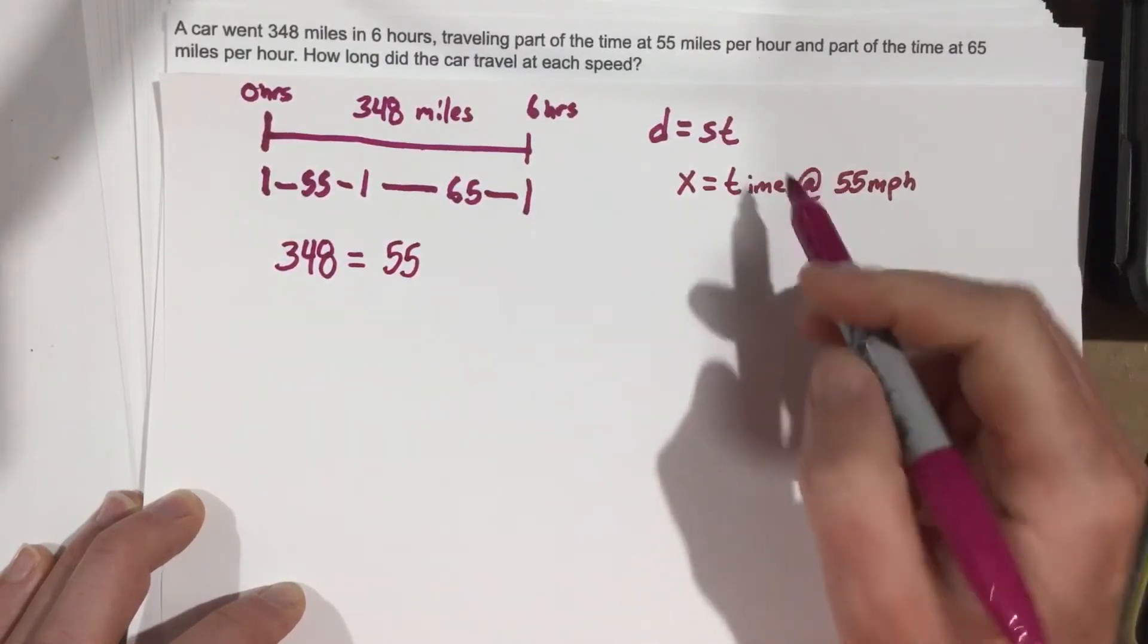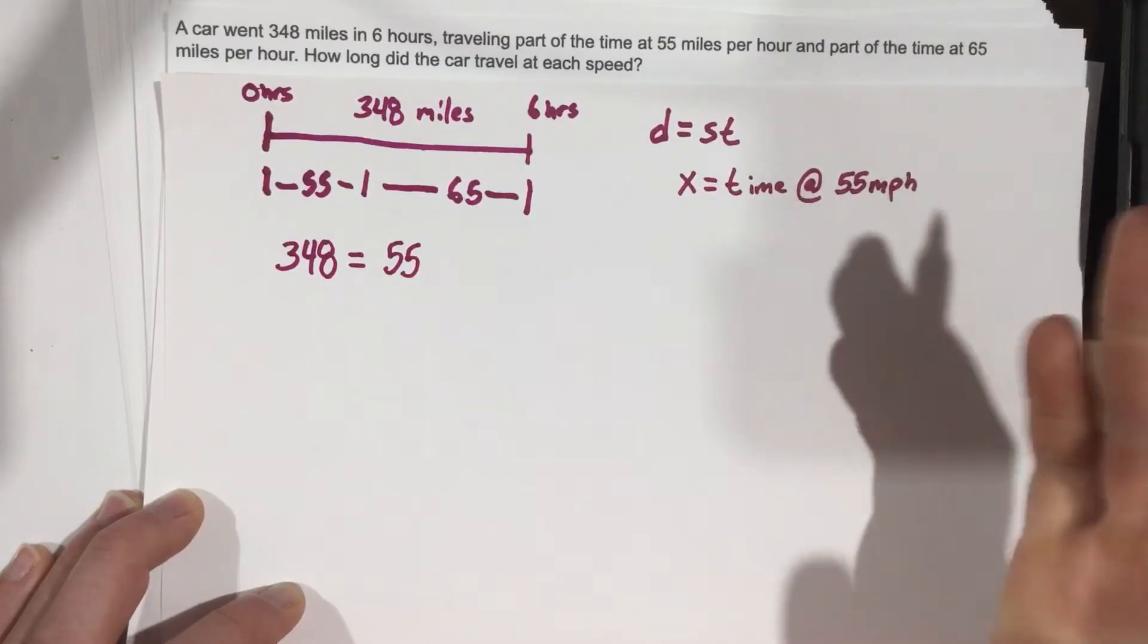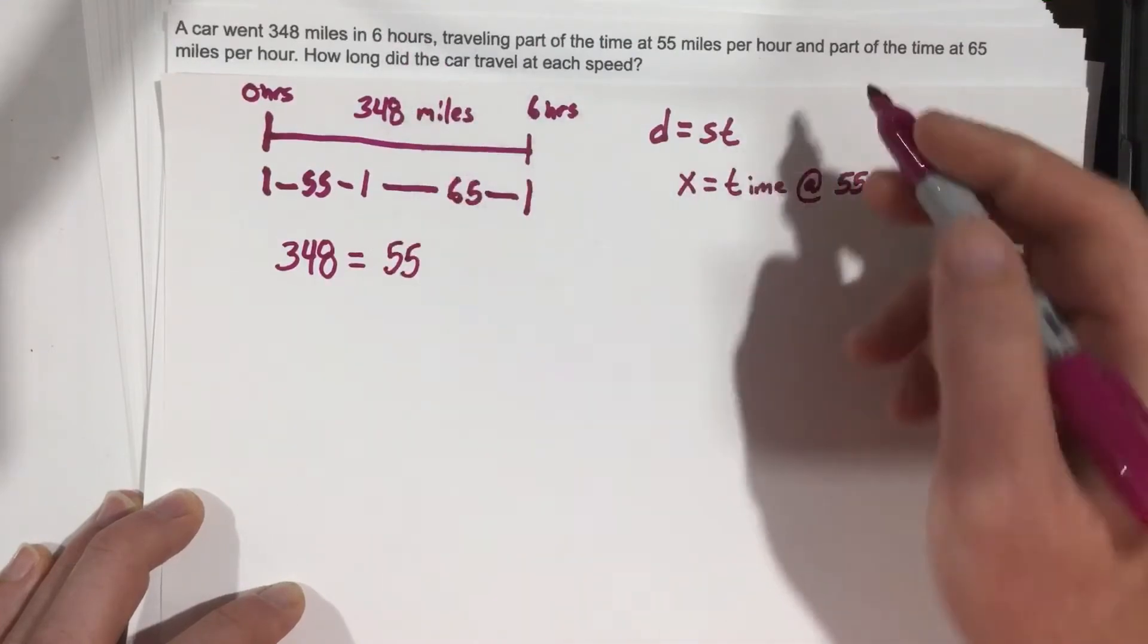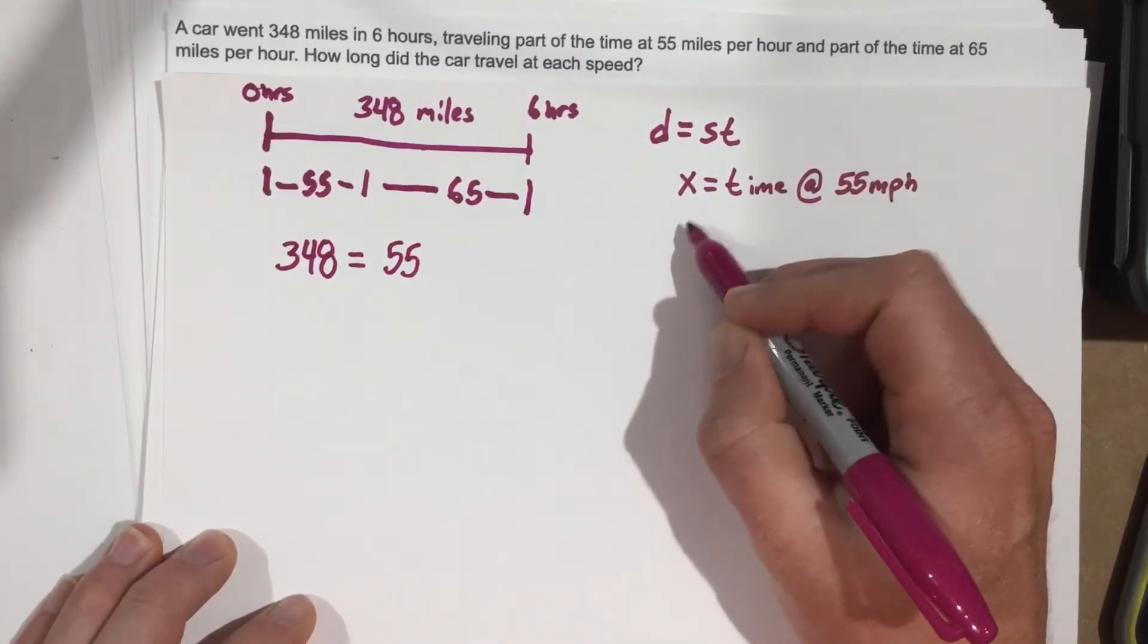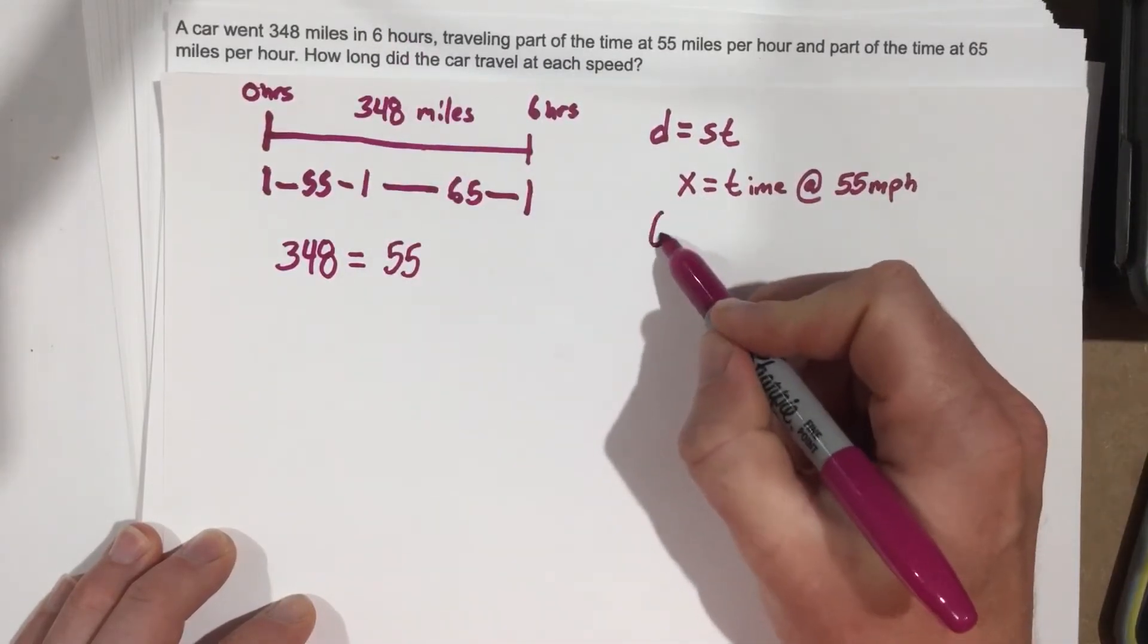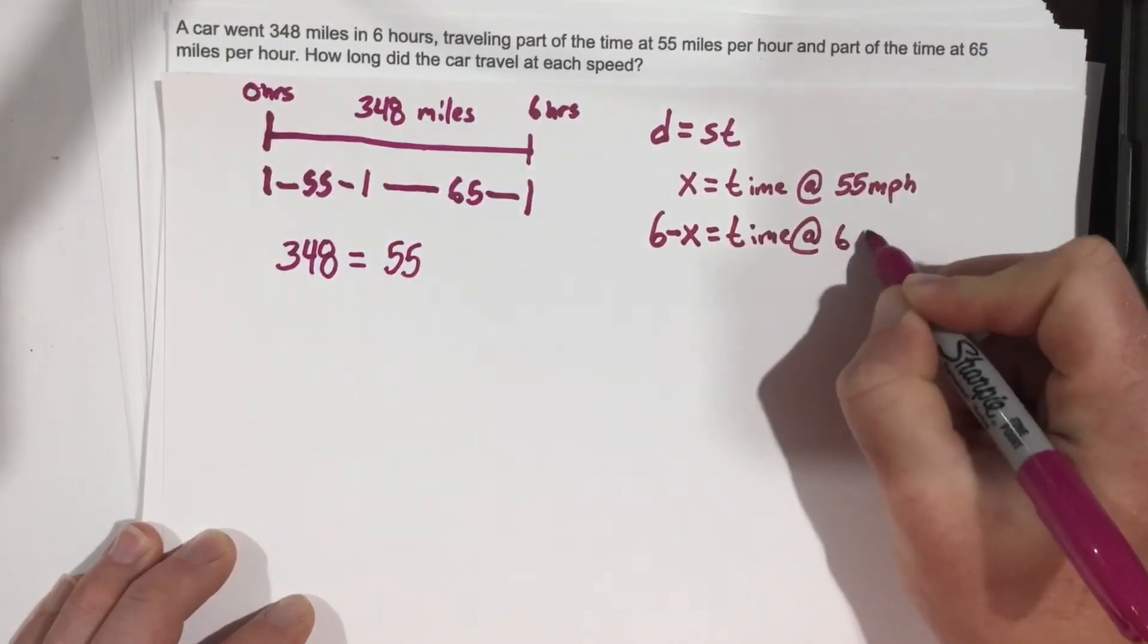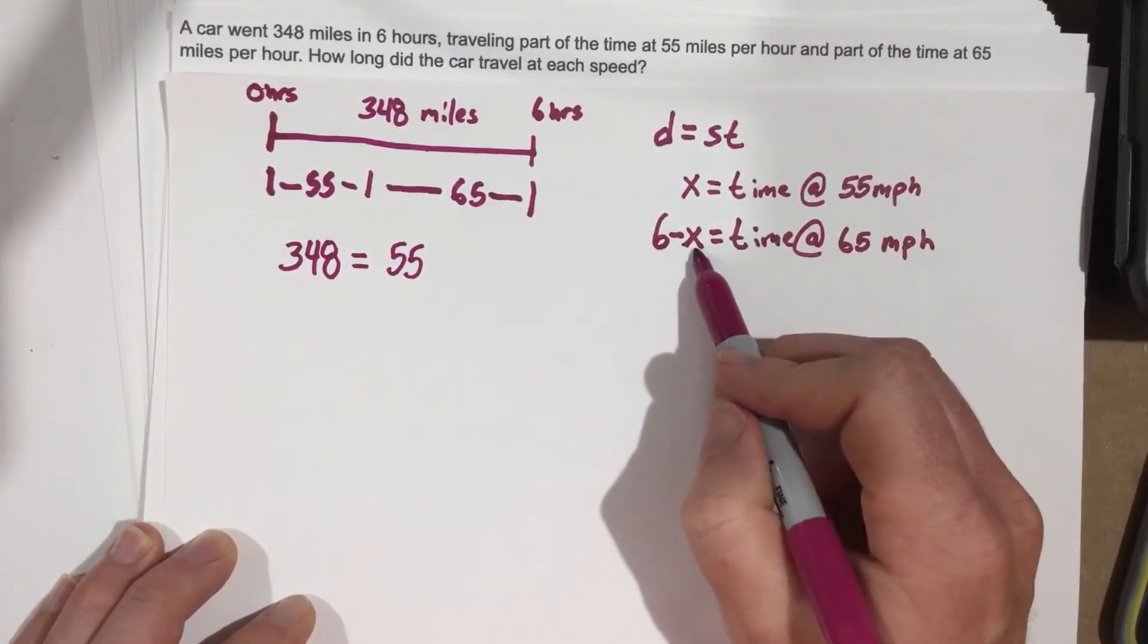Now, this is a really important piece of information because once we set our variable X equals time at 55 miles per hour, what's the time going to be at 65 miles per hour? Well, the total time is six hours. So if X is the time at 55, then six minus the time at 55 gives us the time at 65. So X is the time at 55, and six minus X is the time at 65.